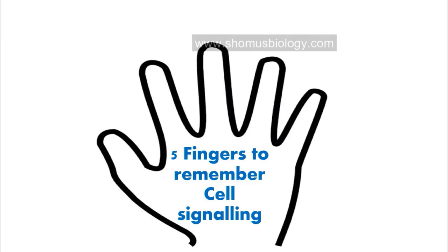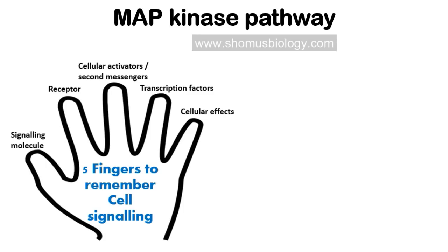In this video I'm going to talk about the MAP kinase pathway. MAP kinase pathway is probably one of the most important pathways of cell signaling. We are going to recall the MAP kinase pathway with the help of our five-finger concept, and we are going to assign the important parameters as per the picture shown here.